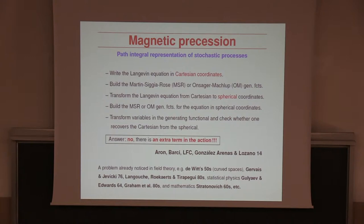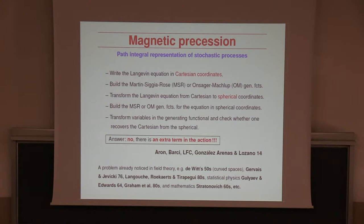What we wanted to do was to write down the Martin-Caesar-Rose or Onsager-Machlup generating functional for this problem. This problem can be written in Cartesian coordinates or spherical coordinates. I can build the Martin-Caesar-Rose or Onsager-Machlup generating functional using methods we know. I can also transform to spherical coordinates and build the generating functional there. If I do the transformation at the level of the Langevin equation, I can go back and forth and everything works fine.